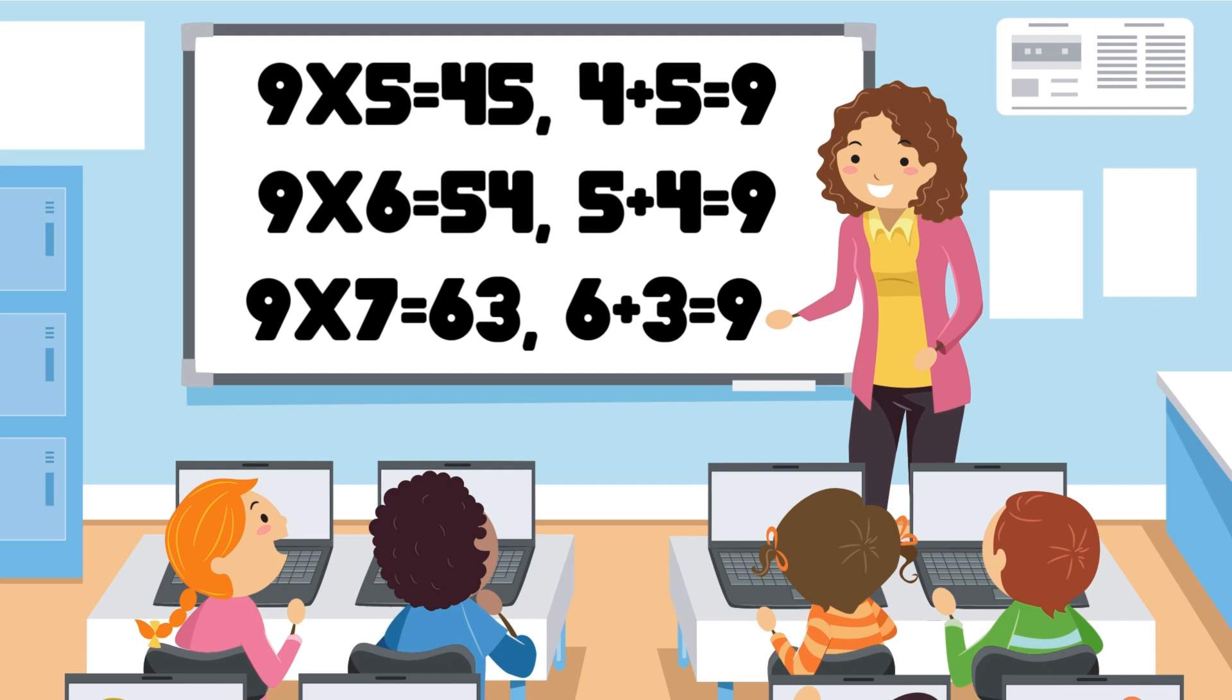Get ready for some magic! Did you know that the number 9 has a superpower? Here's a trick! Pick any number, multiply it by 9, and then add the digits of the result. No matter what number you started with, you'll always end up with the magical number 9! Abracadabra!